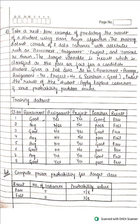In the Naive Bayes algorithm, the first step is we compute the prior probability and posterior probability. The question gives us a sample dataset where the assessment is average, assignment is yes, project is no — the student has not submitted the project — and seminar is good. We have to predict the result as pass or fail, and apply Laplace correction if a zero probability problem occurs.